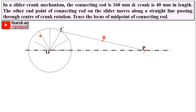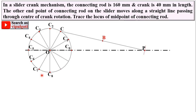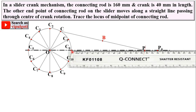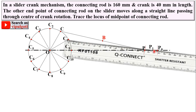Now divide the circle into 12 equal parts using a compass — this method was also discussed in the practice sheet. Name the points C0, C1, C2, C3, C4, C5, C6, C7, C8, C9, and C10. The connecting rod length is 160 mm, so with the scale you can mark the next position of the connecting rod from each C point. Locate each P point such that the distance from Cn to Pn equals 160 mm.